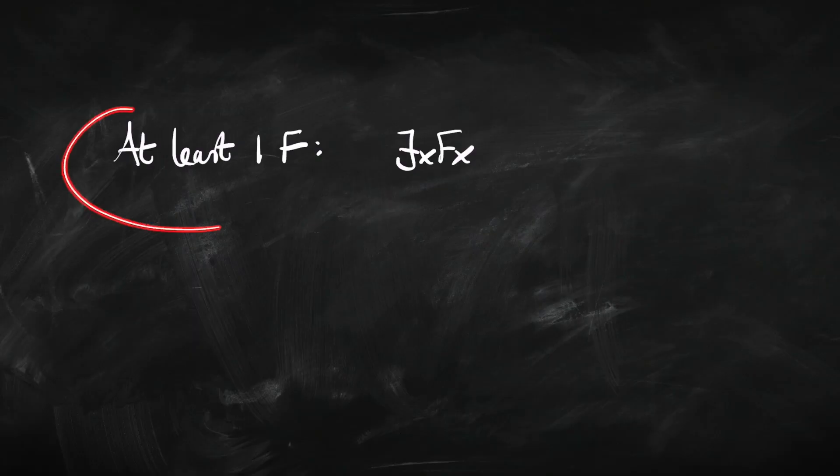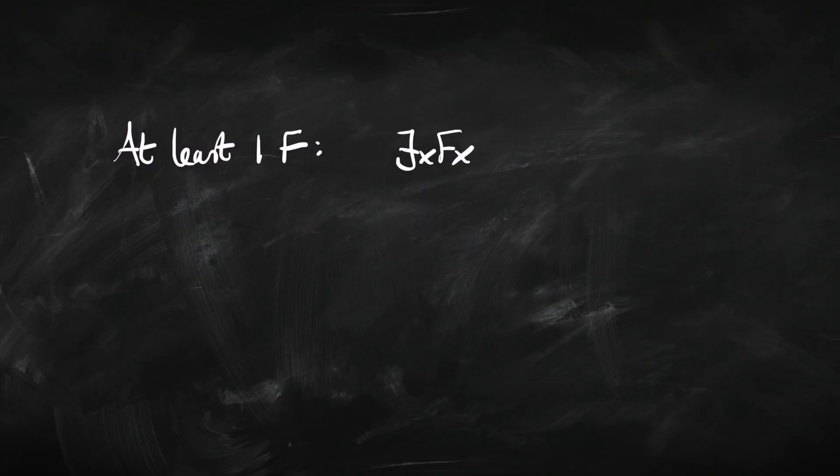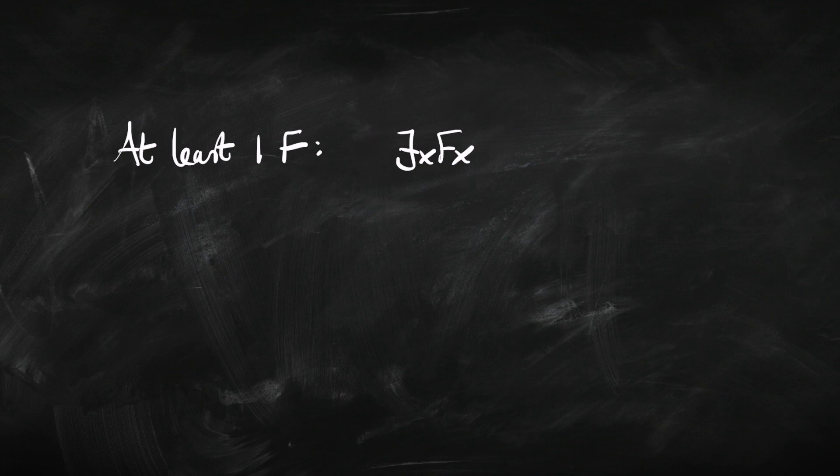Suppose we wanted to express that there's at least one F — like at least one happy person. Well, that's really simple. We just say there is an x, and x is F. That guarantees that there's at least one of them. It doesn't say how many there are, but it tells us that there's at least one, because an x exists.